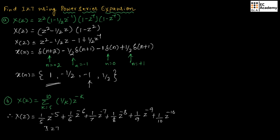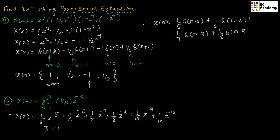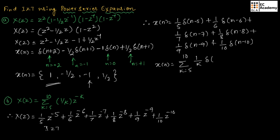Taking the inverse Z-transform on both sides, X of N equals (1/5) delta of N minus 5, plus (1/6) delta of N minus 6, plus (1/7) delta of N minus 7, plus (1/8) delta of N minus 8, plus (1/9) delta of N minus 9, plus (1/10) delta of N minus 10. This entire sequence can be written in summation form as X of N equals summation of K from 5 to 10 of (1/K) delta of N minus K.